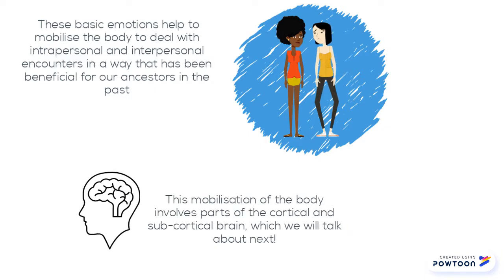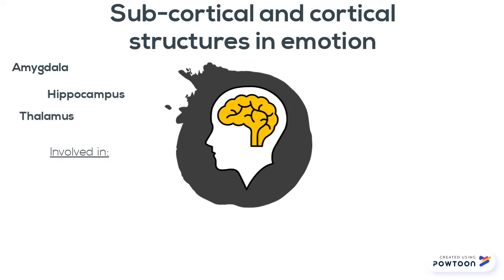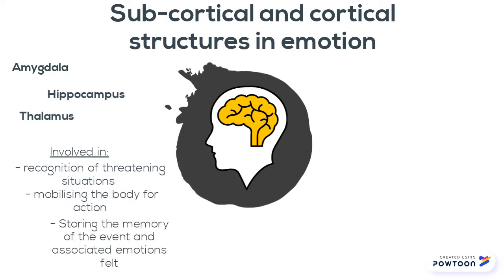This mobilisation of the body involves cortical and subcortical brain structures. Subcortical structures include the amygdala, hippocampus, and the thalamus. These structures are involved in the recognition of threatening situations, mobilising the body for actions, and storing memory of the event and associated emotions.